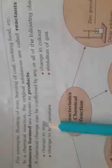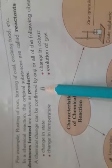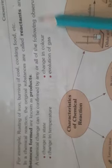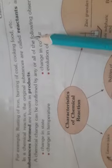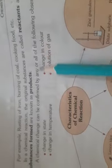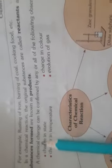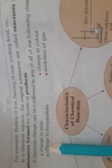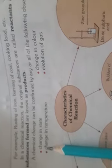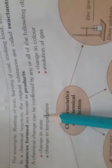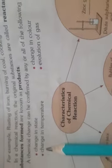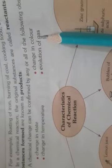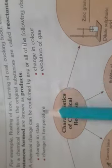So, if we want to confirm any chemical change, we come to the following observations. There are some indicators: change in state, change in color, change in temperature, and evolution of gas. These are the properties used to confirm a chemical change.